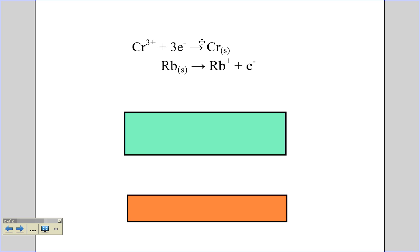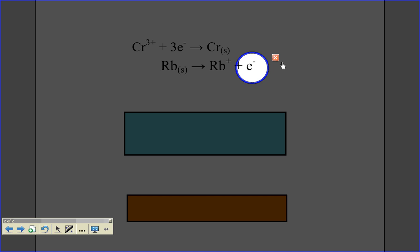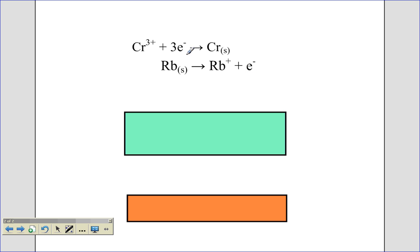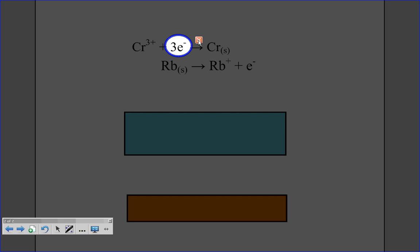And the problem that I have is right here, that there's only one electron, which means I can't just combine these together because this one has three electrons, so it wouldn't cancel out.